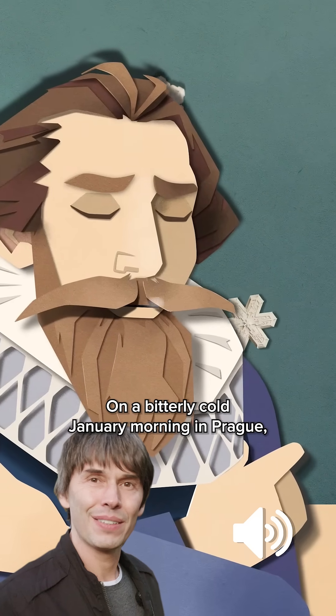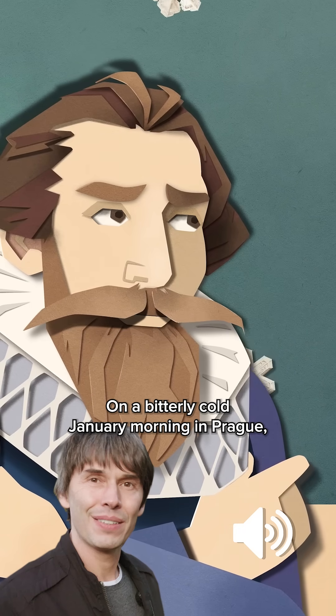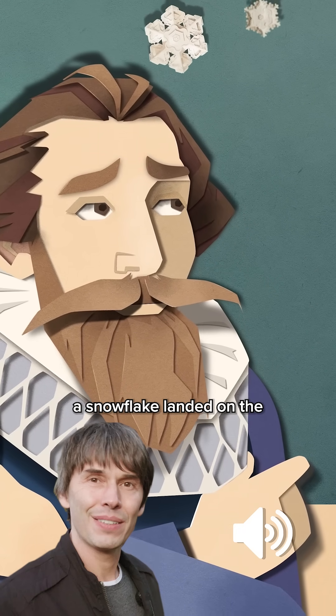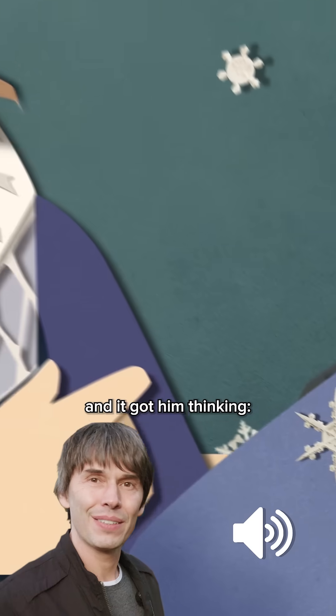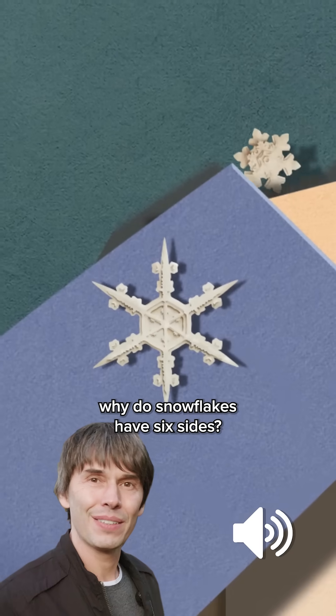Way back in 1611, on a bitterly cold January morning in Prague, a snowflake landed on the sleeve of mathematician Johannes Kepler. And it got him thinking, why do snowflakes have six sides?